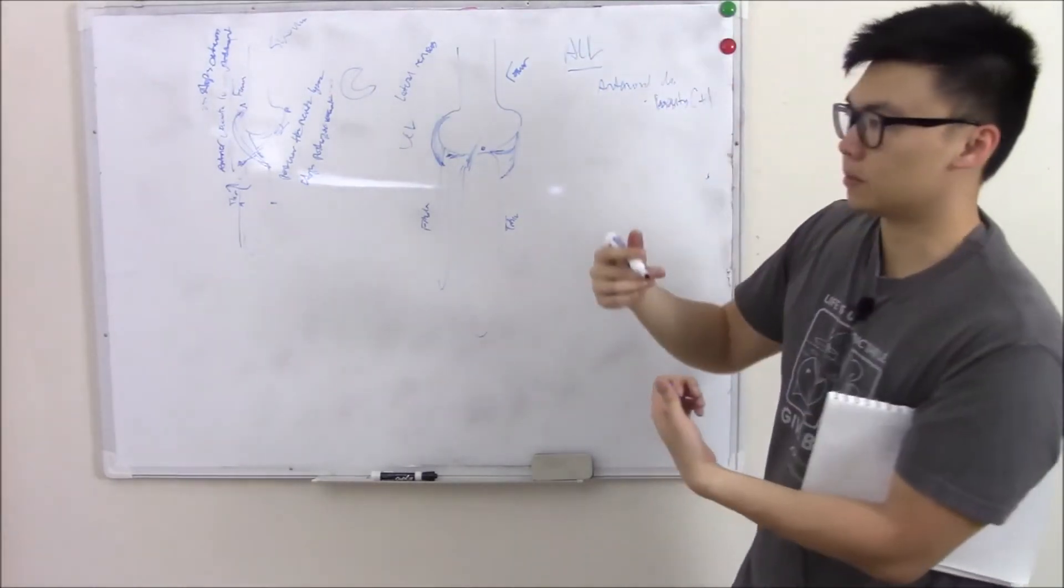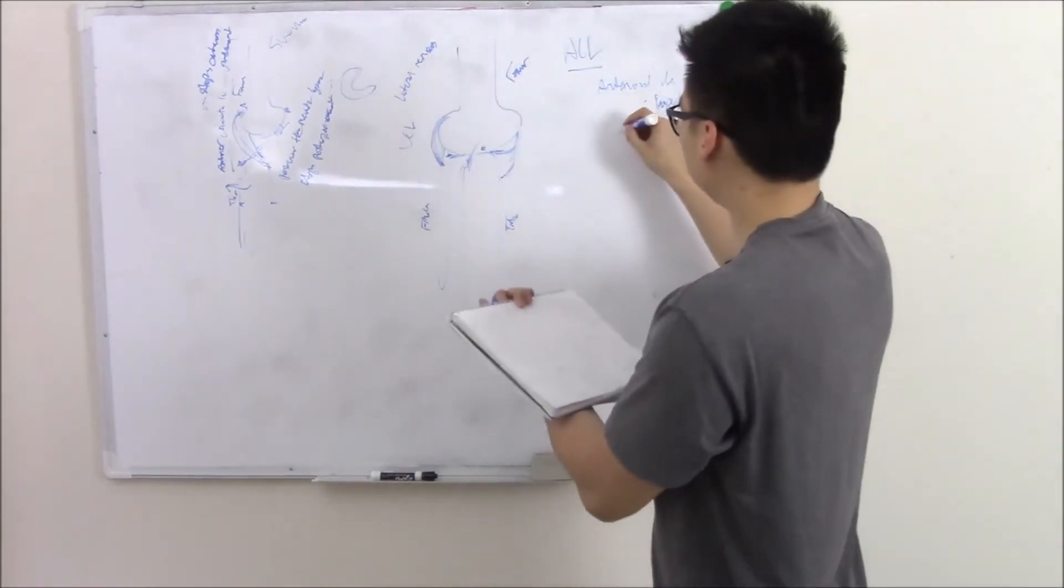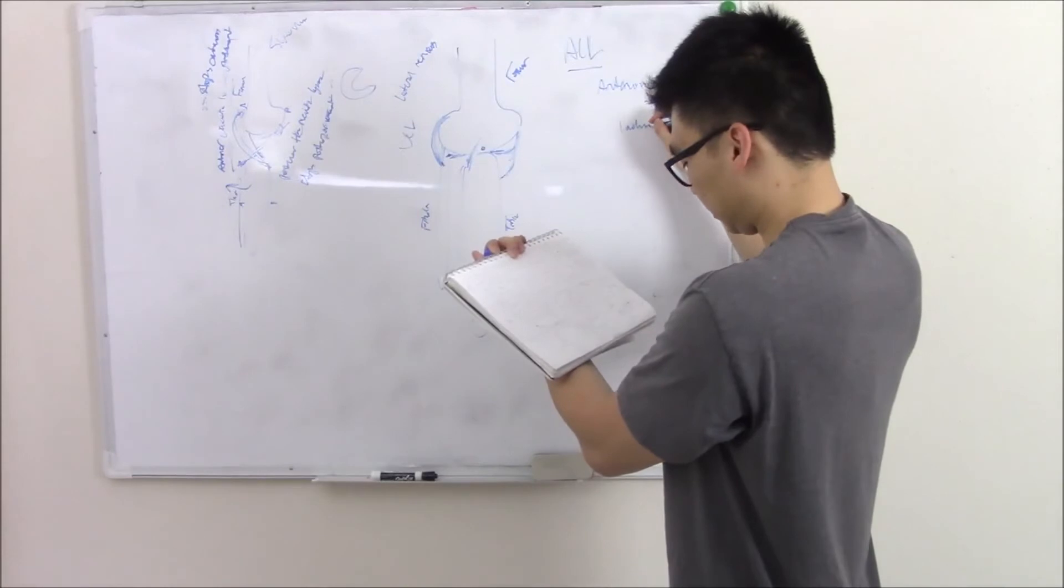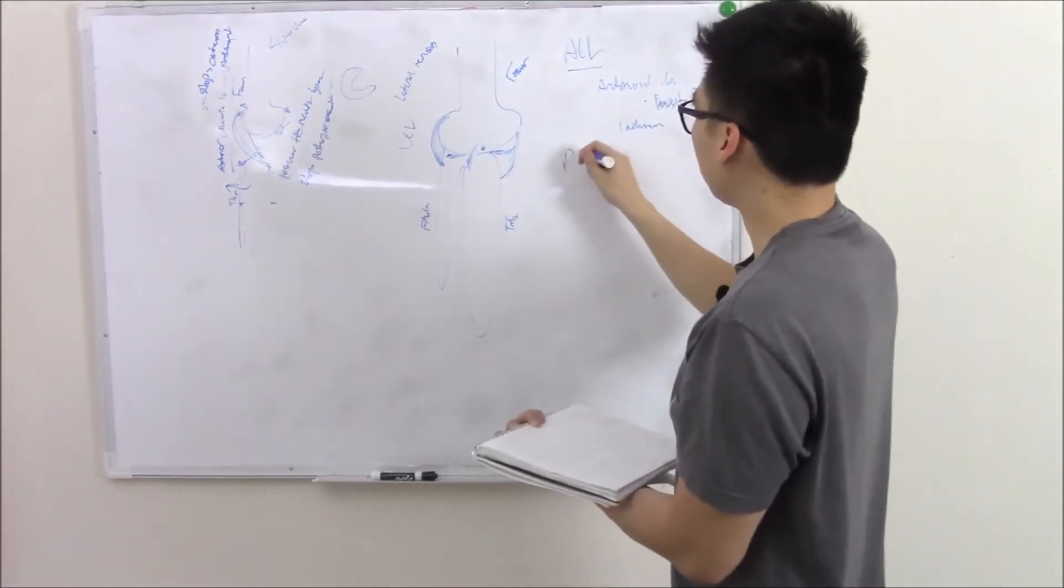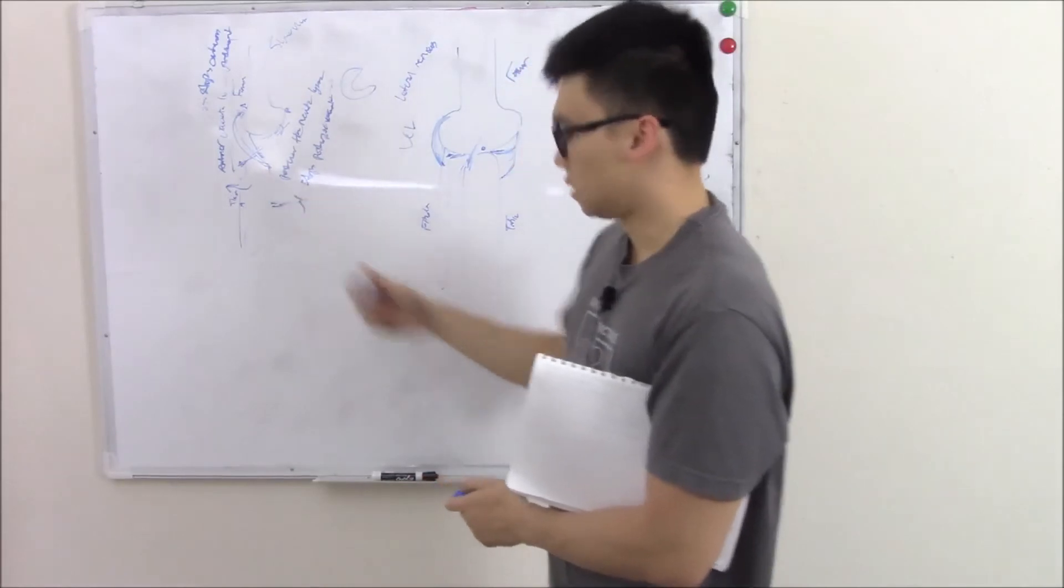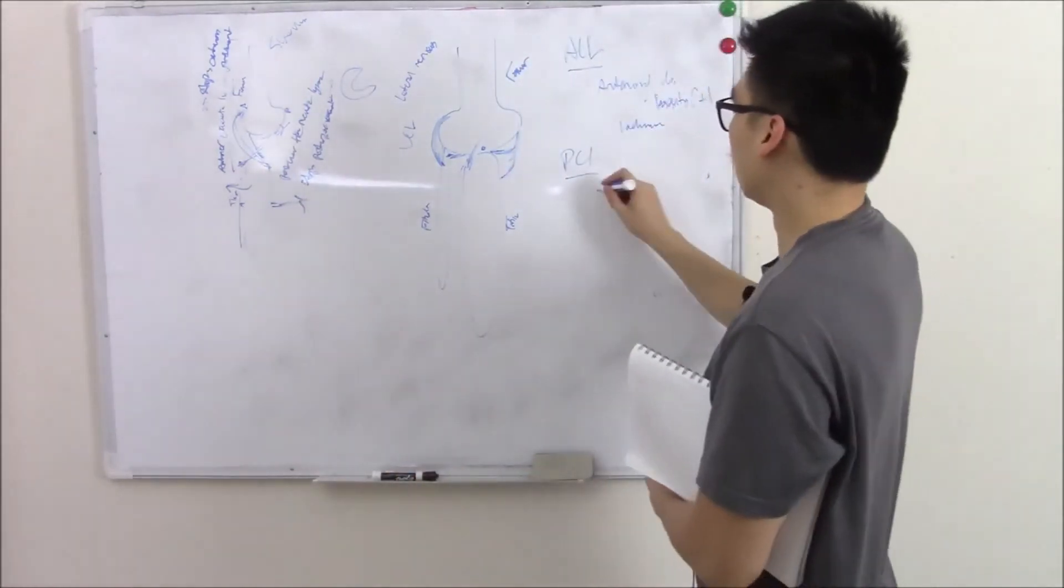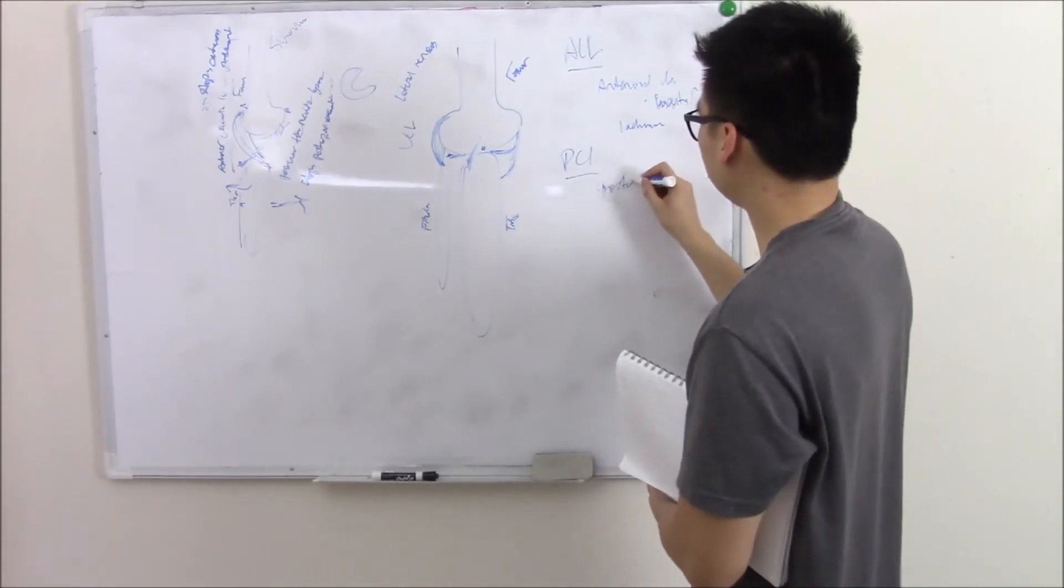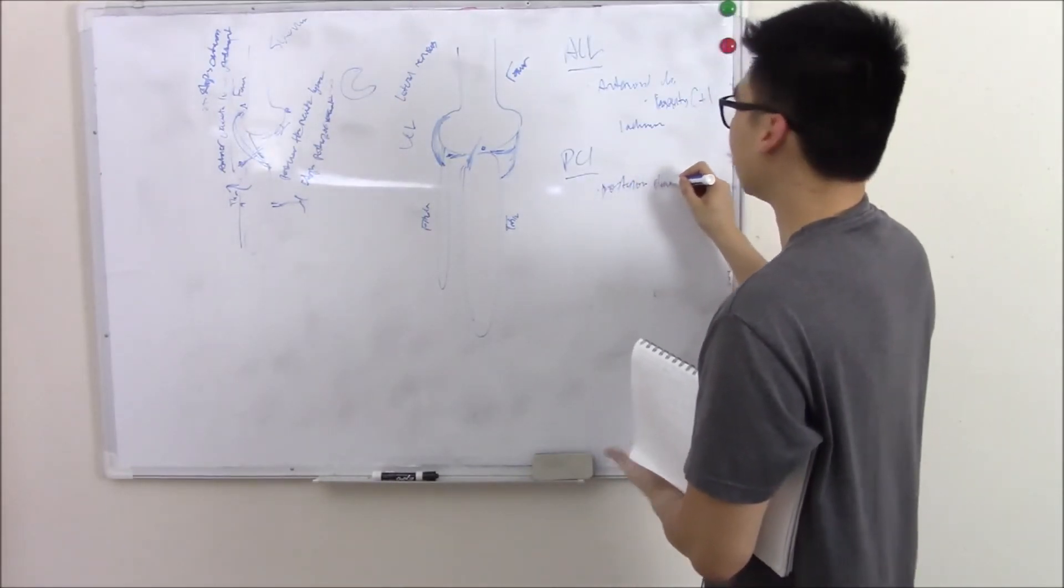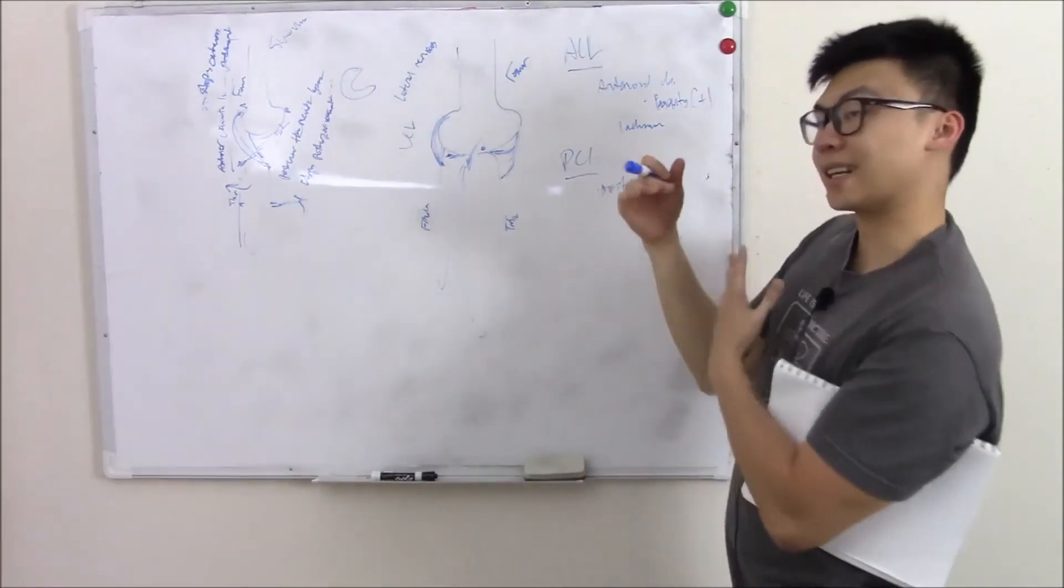Lachman test is the same thing, but instead of bending the knee at 90 degrees, you bend it at 30 degrees. If you suspect the PCL is torn, that's the thing that keeps your tibia from moving back. You can push on the tibia and see if it moves back - that's posterior drawer. But an easier thing to do is just look at it on the side. You'll be able to see that the tibia is kind of sunken back.